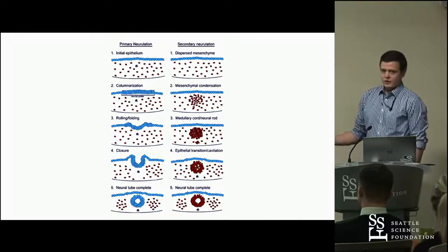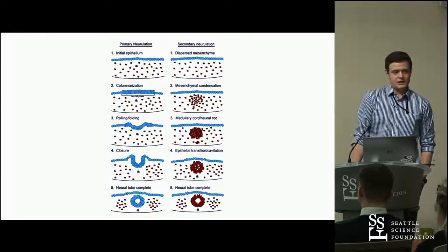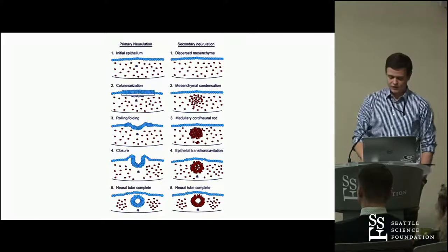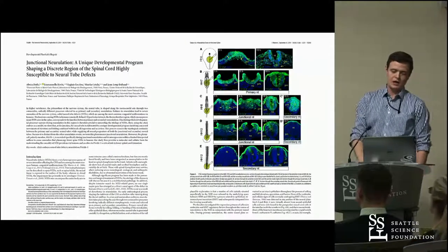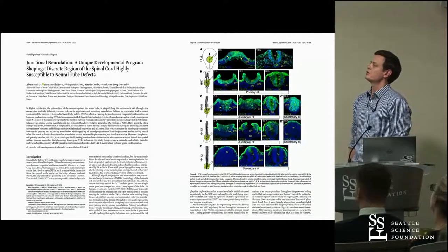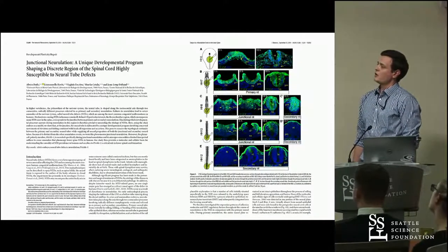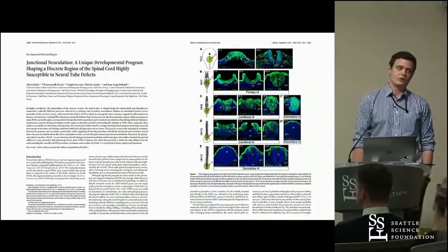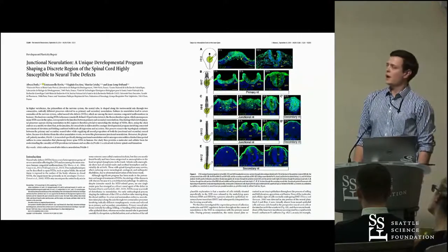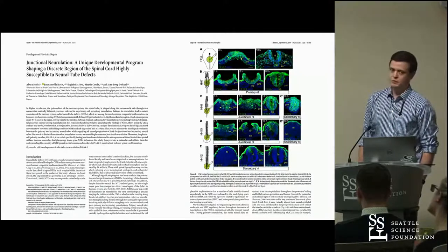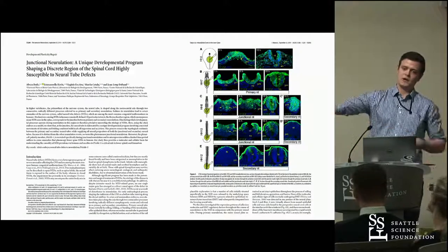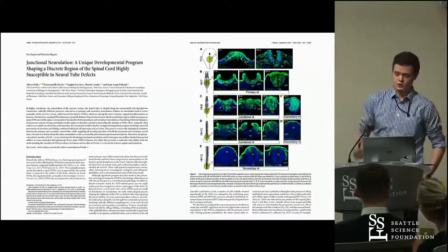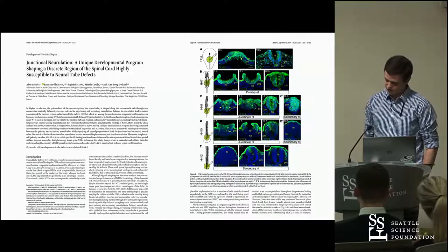But neither one of these seemed to properly explain what had happened in our case. After a little investigation, I ran across a 2014 paper by Dedy, which looked into a third process he believed existed called junctional neurulation — taking place between the end of primary neurulation and the beginning of secondary neurulation at the thoracolumbar junction.